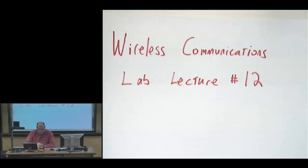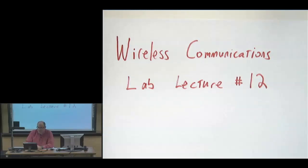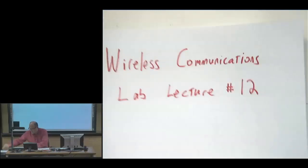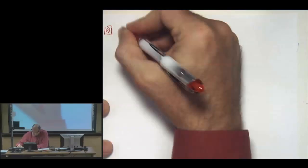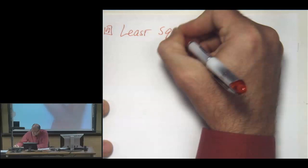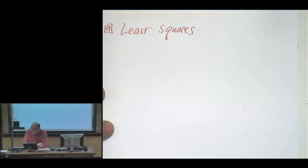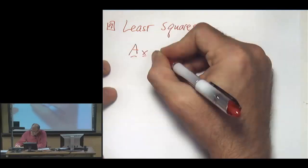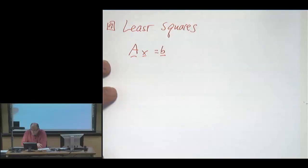Robert Heath, wireless communications lab lecture number 12. So first of all, I want to briefly review this idea of least squares because we're going to use that several times today. The least squares problem was about solving an overdetermined system of equations — overdetermined meaning that A is tall, so that we have too many equations and possibly can't satisfy it exactly.